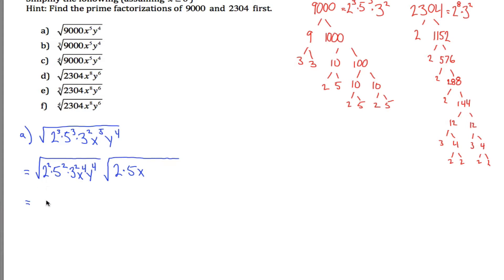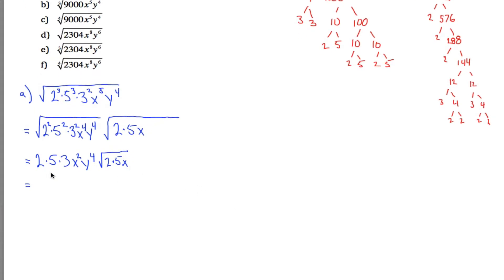Under the good radical I have perfect squares: the square root of 2 squared is 2, the square root of 5 squared is 5, the square root of 3 squared is 3, the square root of x to the 4th is x squared, and the square root of y to the 4th is y squared. The stuff under the bad radical I just leave alone. The simplified version is — 2 times 5 is 10, times 3 is 30 — so I get 30x²y⁴ times the square root of 10x.